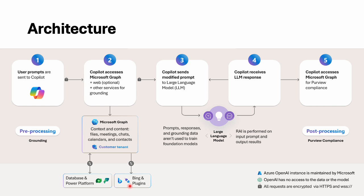At step three, Copilot sends a modified prompt to the large language model — basically an AI. This step is responsible for taking the grounded information and modifying it into what we call a smart prompt, so the large language model can better understand the request. The large language model will then send a response back to Copilot.